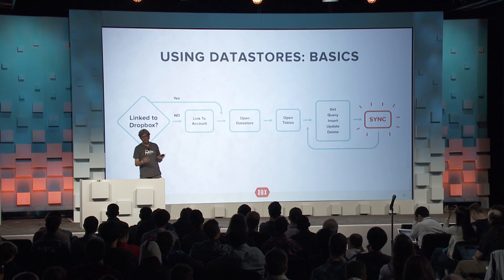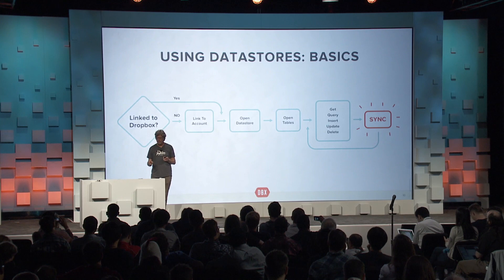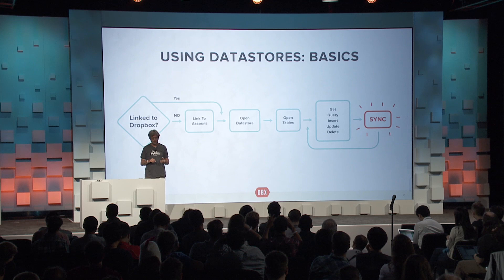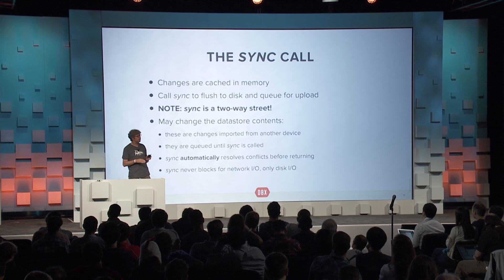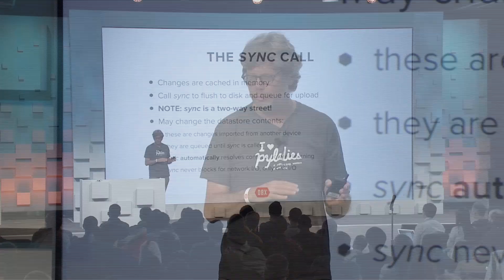Once you have your tables open, you can use the data — you can query, get data out, update records, insert records, and so on. Whenever you want your changes to be persisted in the Datastore and on the Dropbox server, and to make it to other devices if everything is online and connected, you call this magical operation: sync. Sync is where it really gets interesting and where all the magic happens — sync is no longer really a four-letter word, because it takes care of all this stuff for you.